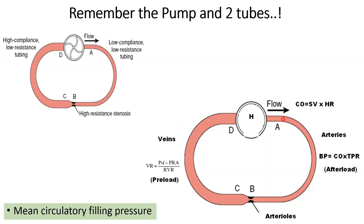During systole, arterial pressure rises above MCFP to around 120 mmHg. Because the arteries are elastic, they recoil on the blood that distended them, and that recoil produces the diastolic pressure of 80 mmHg, propelling blood forwards. So blood pressure is generated by the heart displacing volume from the venous side to the arterial side, where everything was previously at MCFP.